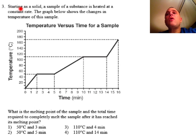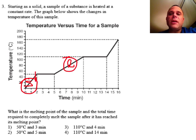Number three: Starting as a solid, a sample of a substance is heated at a constant rate. The graph below shows the changes in temperature of this sample. What is the melting point of the sample and the total time required to completely melt the sample after it has reached the melting point? So we are looking for the melting point to begin with. I know that the substance is a solid here and a liquid here, so it will be melting at this point right here, and that is 50 degrees Celsius.